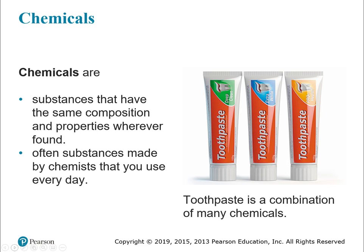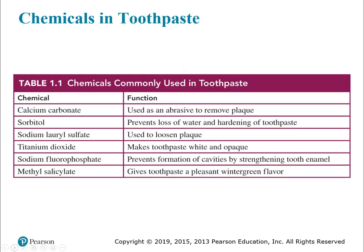Chemicals are substances that have the same composition and properties wherever they're found. Chemicals partake in chemistry. All the stuff that you use every day — deodorant, antiperspirant, hair products — all of those things have chemicals in them. You're going to brush your teeth, maybe do some mouthwash — all of those things are made up of chemicals. Toothpaste is the example we're going to use: it's a combination of many chemicals, and all those chemicals play a role in keeping your teeth clean and getting rid of plaque.